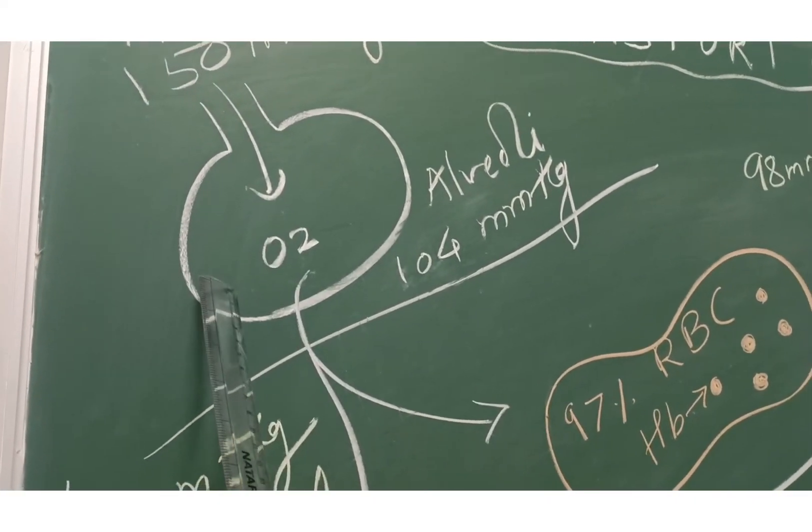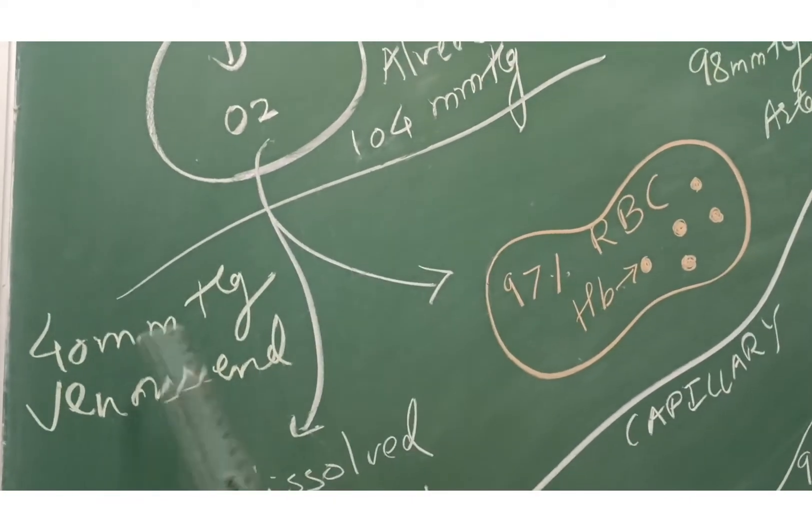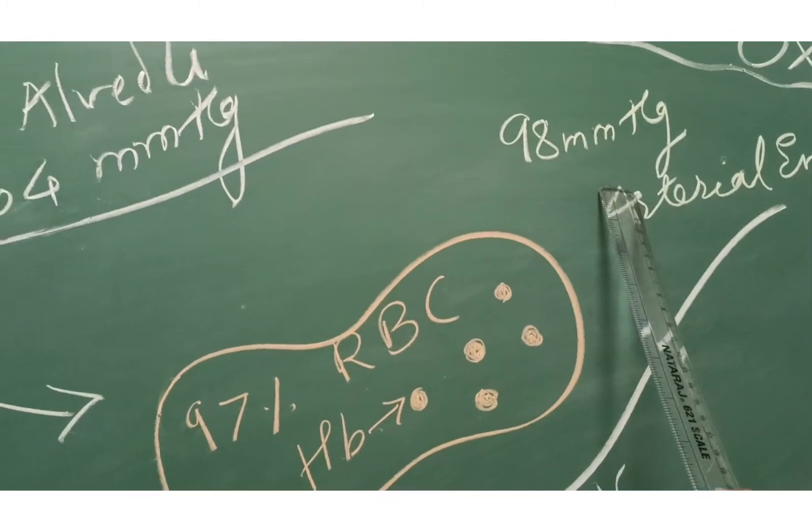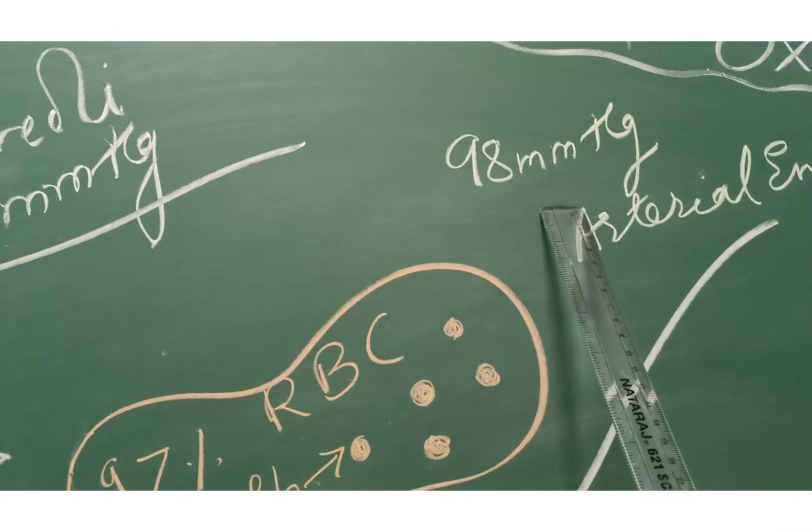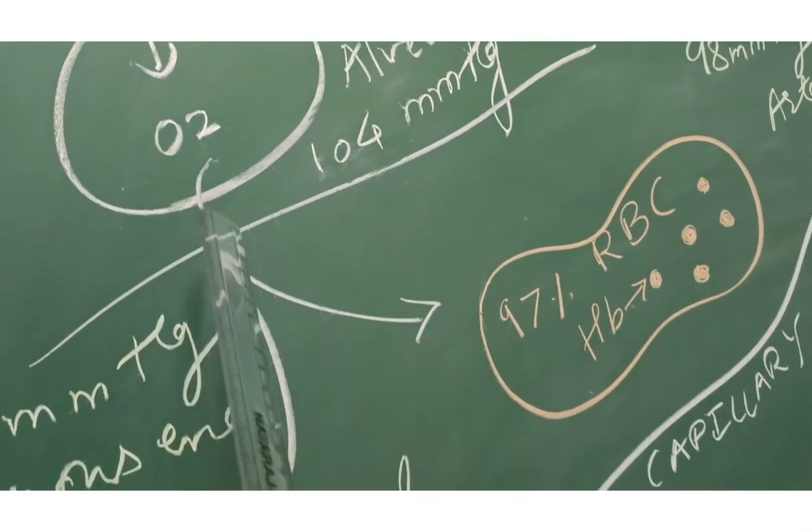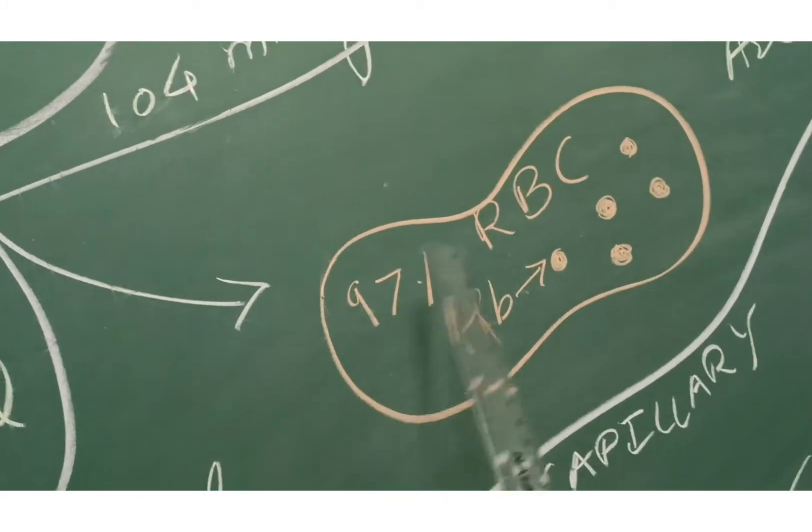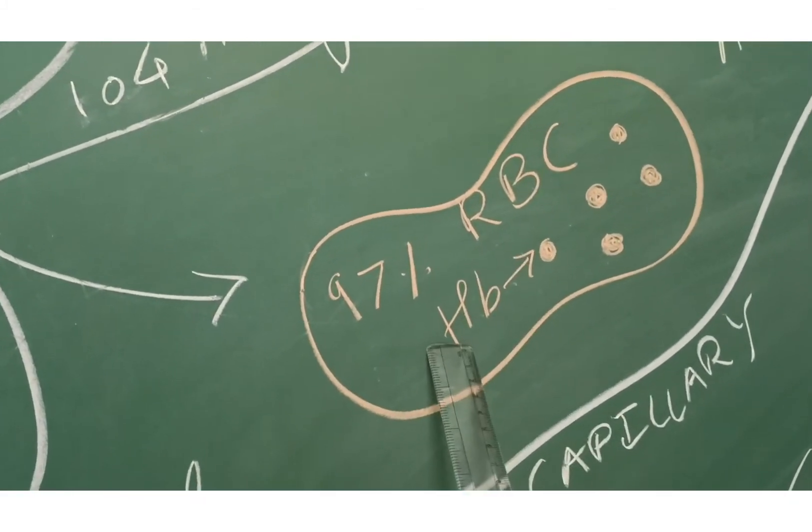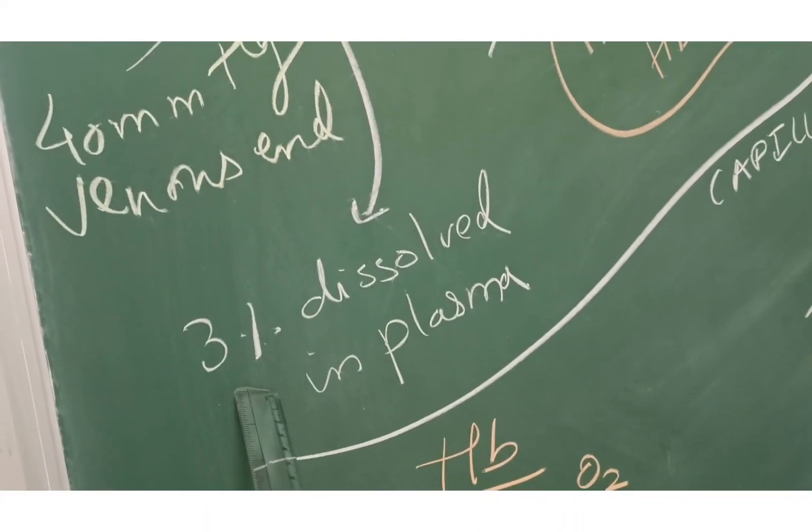Now these alveoli lie in close proximity with the capillary. The capillary has a venous end as well as an arterial end. Venous end pressure is 40 millimeters of mercury and arterial end is 98 millimeters of mercury. The oxygen, again from higher pressure, will come into lower pressure. 97% will bind with the RBC which has hemoglobin, and 3% gets dissolved into the plasma.